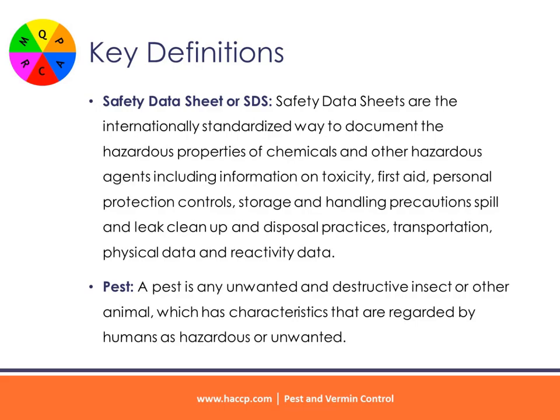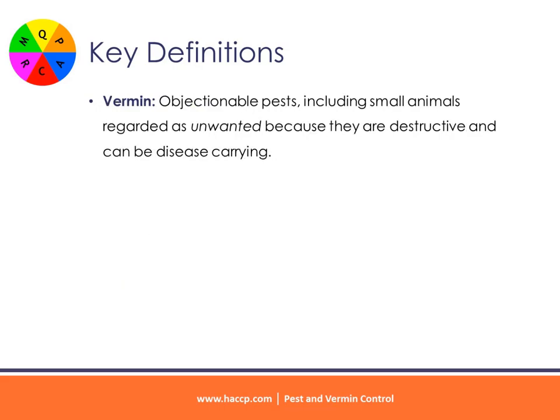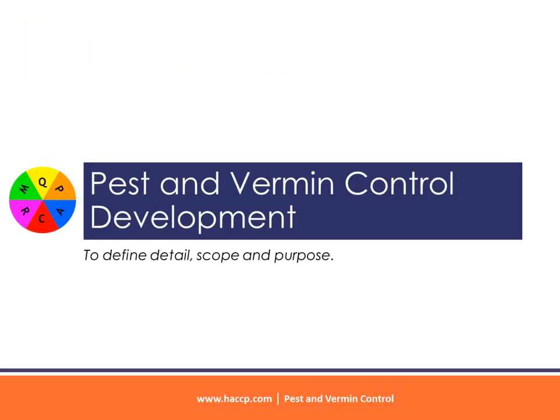Pest: A pest is any unwanted and destructive insect or other animal which has characteristics that are regarded by humans as hazardous or unwanted. Vermin: Objectionable pests, including small animals regarded as unwanted because they are destructive and can be disease-carrying.